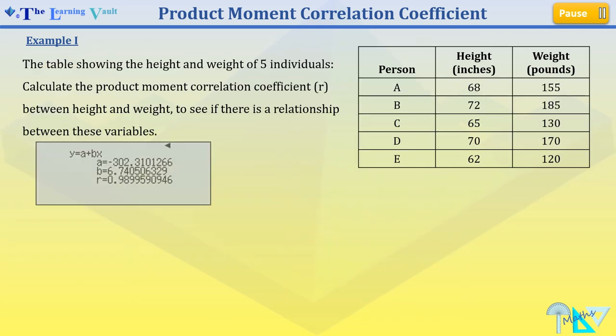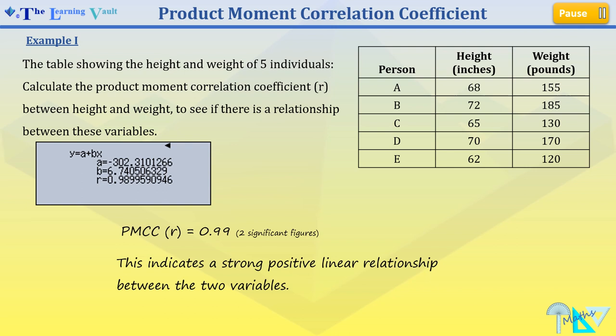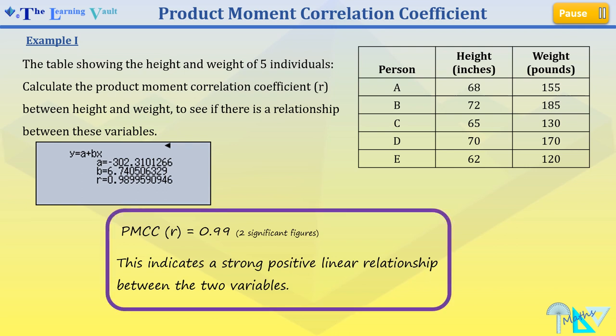Now based on our calculator display, we know that our R is 0.99 to two significant figures. This indicates a strong positive linear relationship between the two variables, in this case, the height and weight of the 5 individuals.